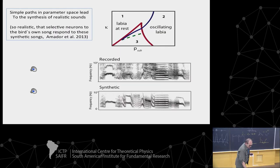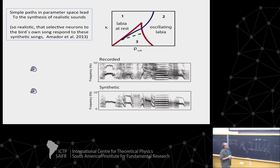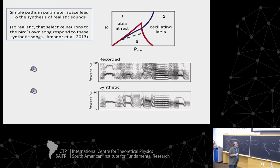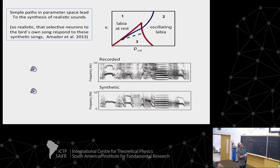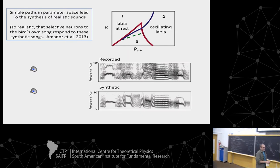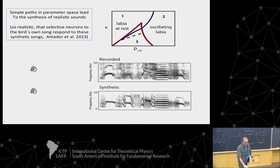Let me remind you of something from the first lecture. What we do have is a model that allows you to interpret the electrical activity in the muscles. We have a model where, if you give me the activity in the respiratory muscles and in the syringeal muscles, you can plug those instructions into the model, you get paths in parameter space, and they generate sound. Let me remind you what these kinds of sounds would sound like.